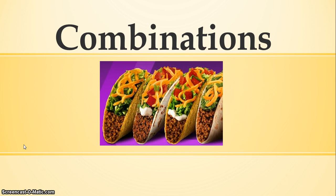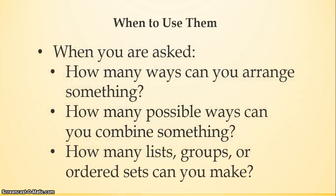Why is there a taco on the front screen? Because it'll be relevant in a second — just hang on. So, you're probably wondering what a combination is. It's a way of counting — a way we figure out the number of ordered sets, groups, or lists we can make when we are taking a certain number of elements or items from a larger group of elements or items.